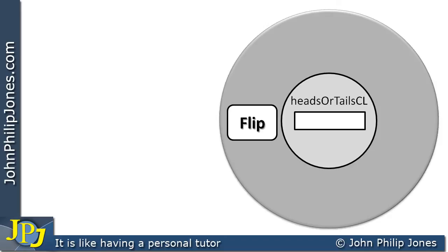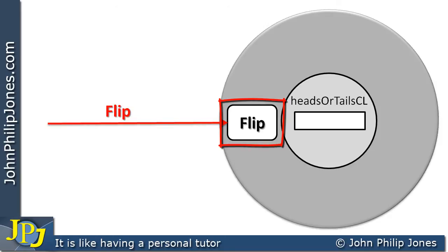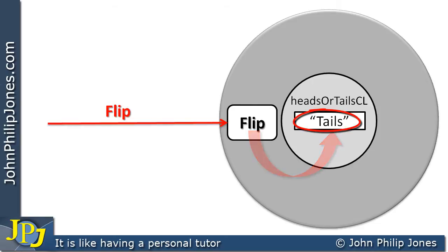Now we're going to look at the message being sent again. The method then executes in response to the message, and what it will do is produce "tails" on this particular occasion. We want that to appear randomly, so there we can see the model of the object and how we want it to behave at runtime.